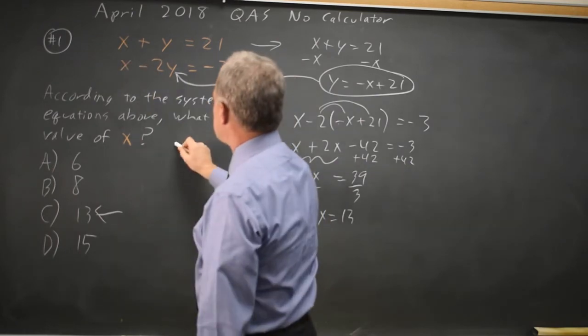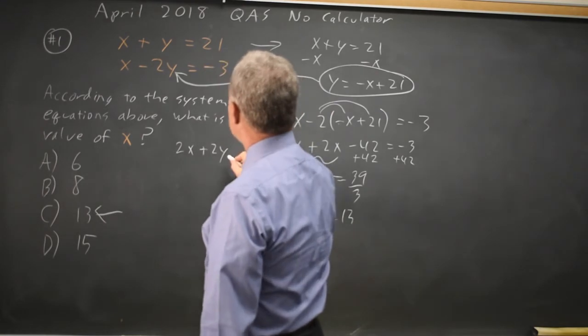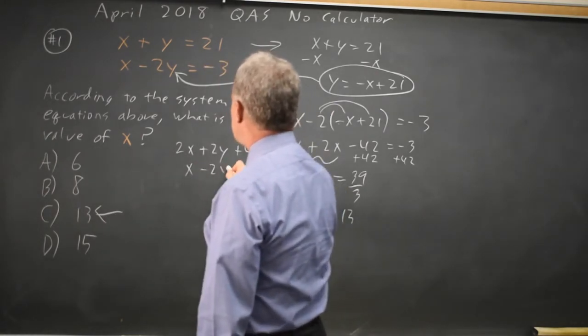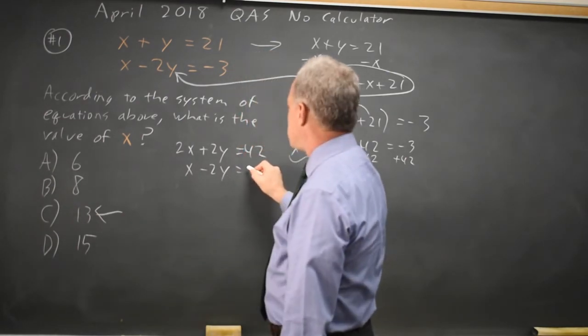So 2 times x is 2x. 2 times y is plus 2y. 2 times 21 is 42. And I'll also have x minus 2y. That's an equal sign. x minus 2y equals negative 3.